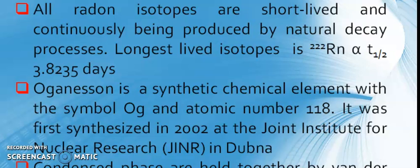All Radon isotopes are short-lived and continuously being produced by natural decay processes. The longest-lived isotope is 220 Radon with a half-life of 3.8 days. Oganesson is a synthetic chemical element with the symbol Og and atomic number 118. It was first synthesized in 2002 at the Joint Institute for Nuclear Research in Dubna.